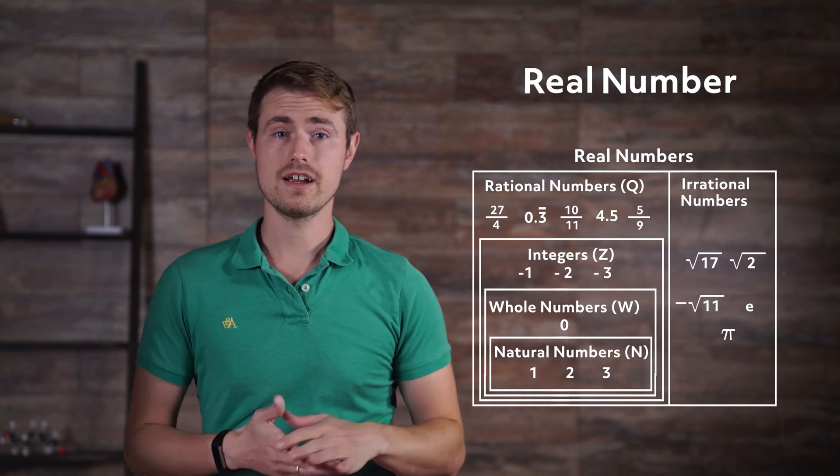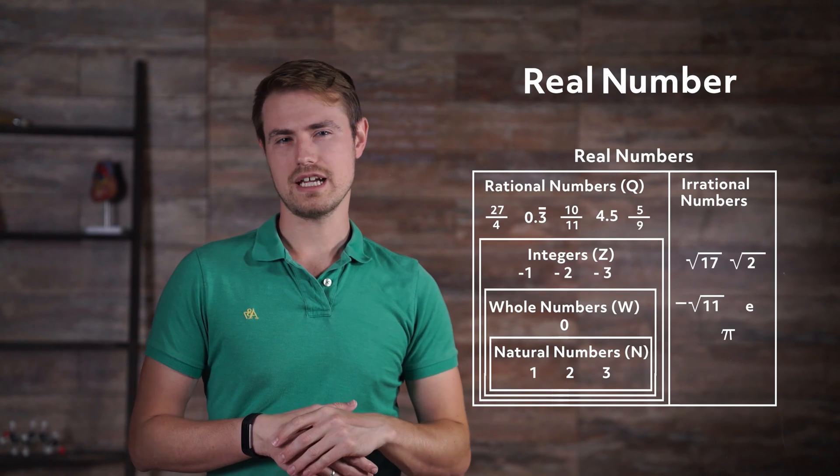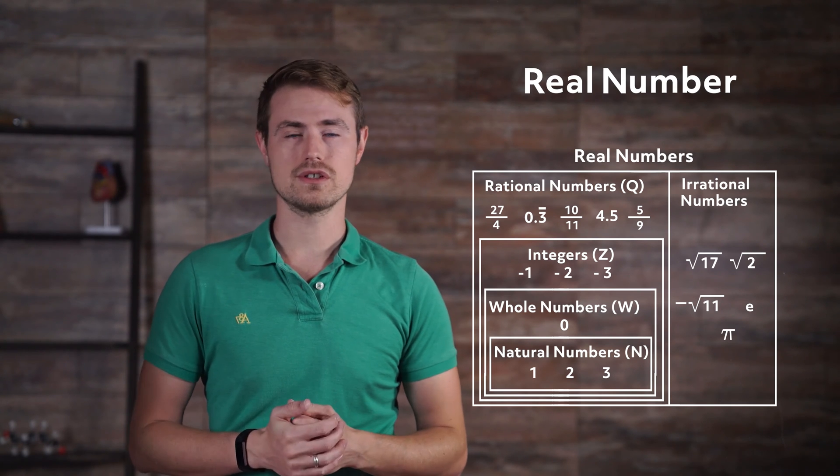Hi, welcome to this video on rational and irrational numbers. Rational and irrational numbers comprise the real number system. This Venn diagram shows a visual representation of how real numbers are classified.